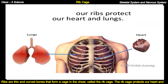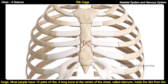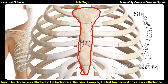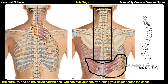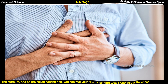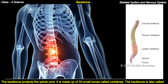The rib cage protects our heart and lungs. Most people have 12 pairs of ribs. A long bone at the center of the chest called the sternum holds the ribs from the front. The ribs are also attached to the backbone at the back. However, the last two pairs of ribs are not attached to the sternum and so are called floating ribs.